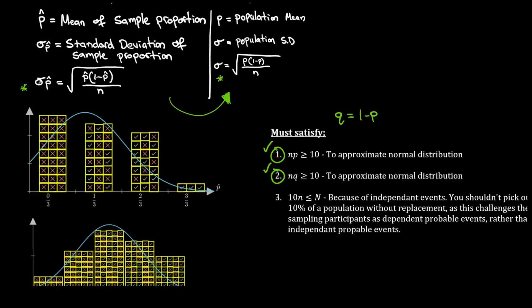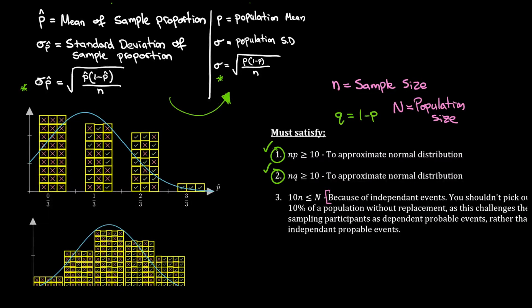There is also a third condition: 10 times the small n must be less than or equal to the large N, where small n is the sample size and large N is the population size. This is saying we can only take up to 10% of the population size as a sample size. This is because of independent events — we shouldn't pick more than 10% of the population without replacement, as that challenges the concept of sampling participants as independent probable events rather than dependent ones.